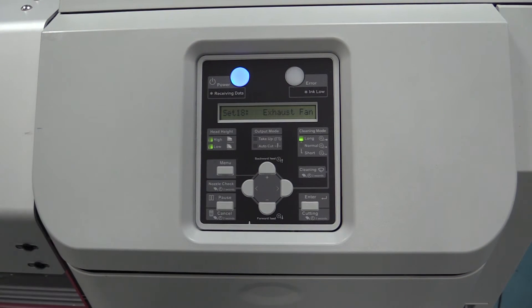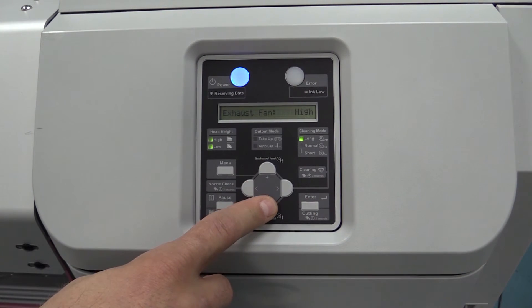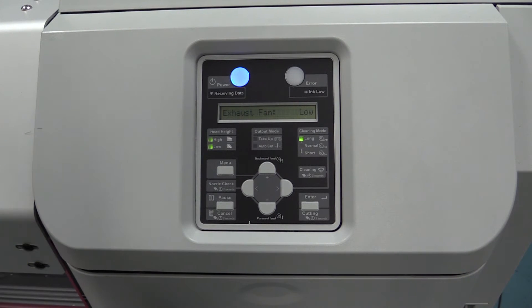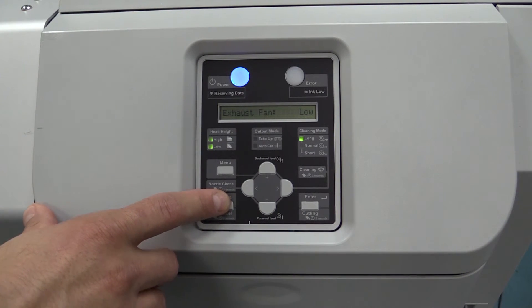Setting 18 is the exhaust fan. On the back side of the print enclosure there is a small fan. You can set it to low, high, or off. Leave it set to low. No reason to adjust this.